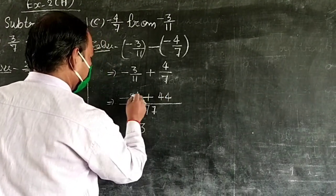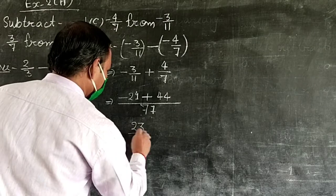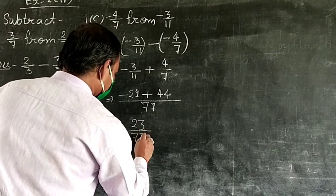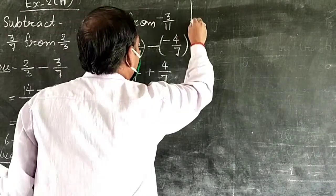Minus 21 plus 44 equals 23. Answer: 23 upon 77. Next, Question Number 7.